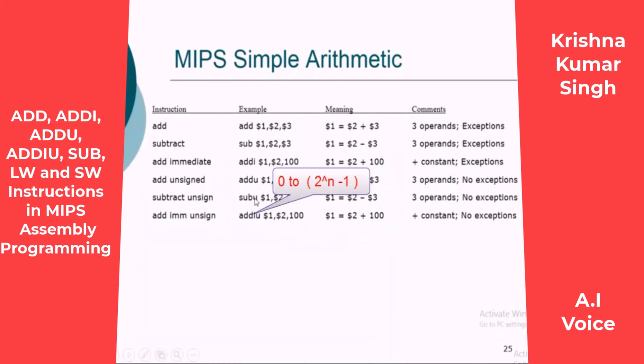As you know, we have two types of data: signed data and unsigned data. In unsigned data, the value will be between 0 to 2 power n minus 1, where n is the number of bits. For example, if you have 16 bits, 2 power 16 is 65,536.